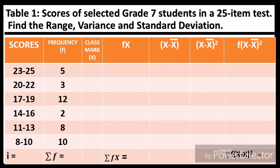On the first column, we have the given scores: 23 to 25, 20 to 22, 17 to 19, 14 to 16, 11 to 13, and 8 to 10. The class interval, or I, equals 3.